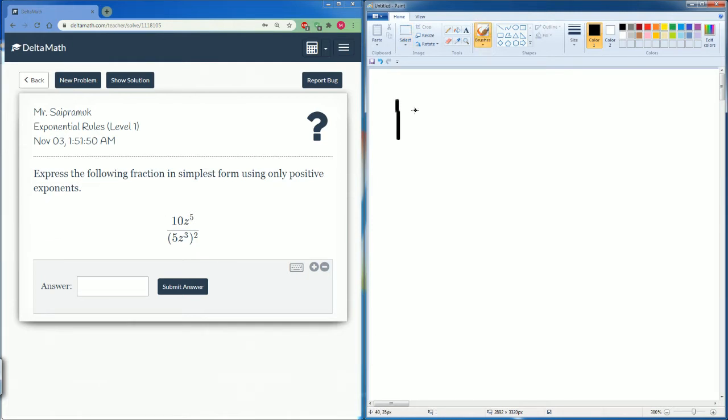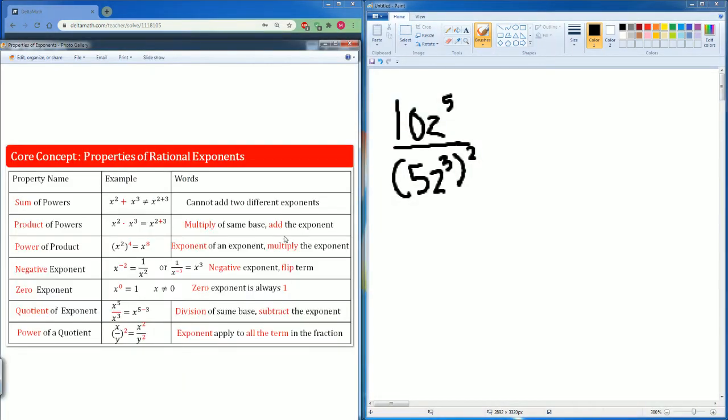We have 10z to the fifth power and on the bottom we have parentheses 5z third to the second power. Please note that you are going to be required to use your properties of an exponent.